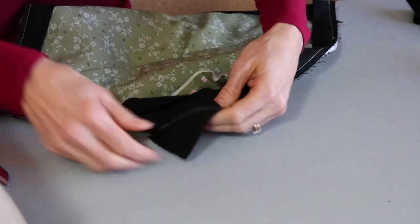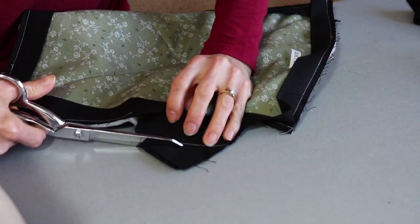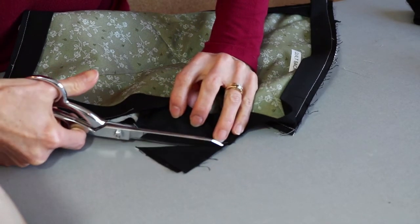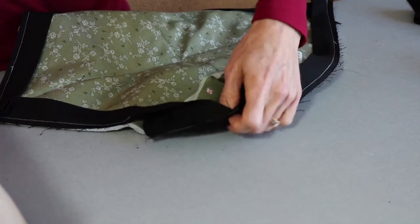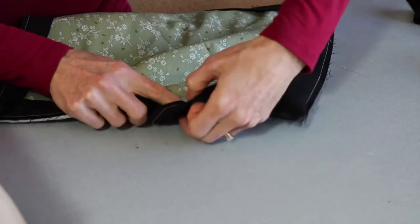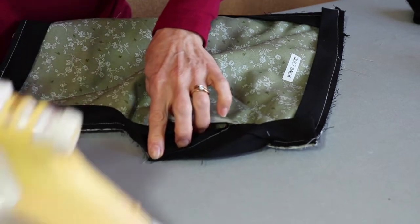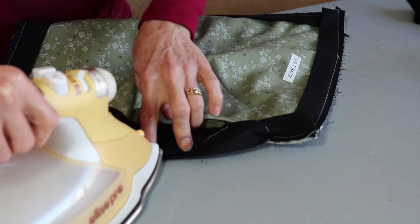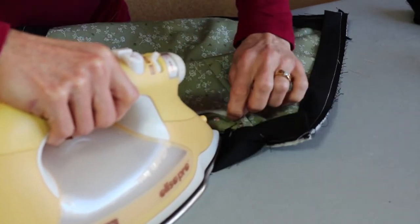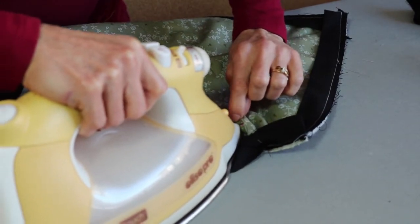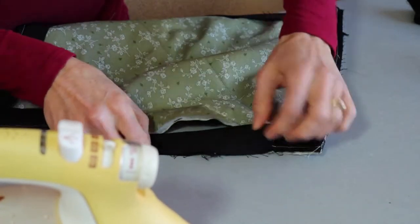Once again we're going to trim our seam about a quarter of an inch and iron it open and then iron it in half.